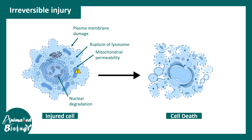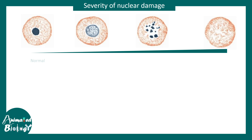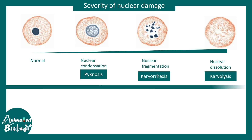At the nuclear level, we can distinguish different stages: a normal nucleus, then nuclear condensation known as pyknosis, nuclear fragmentation known as karyorrhexis, and nuclear dissolution known as karyolysis. These occur at different stages of damage depending on how intense the damage is. Another hallmark of irreversible damage is alteration in mitochondria.